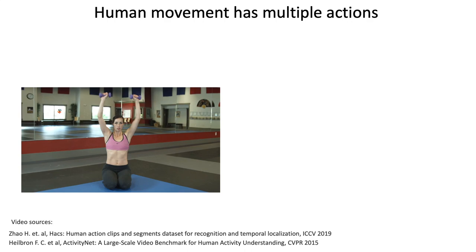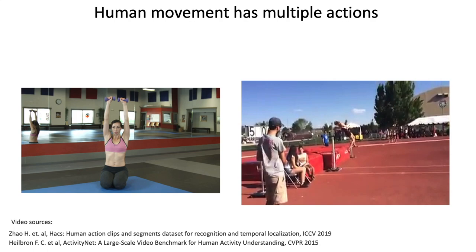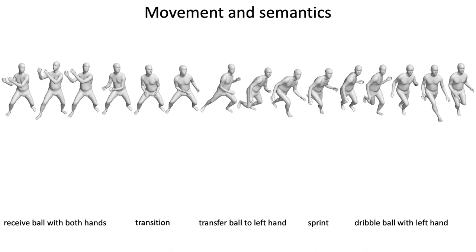Natural human movements involve multiple simultaneous actions like kneeling and lifting dumbbells or sequential actions like running, performing a high jump, falling over, getting up and walking away.